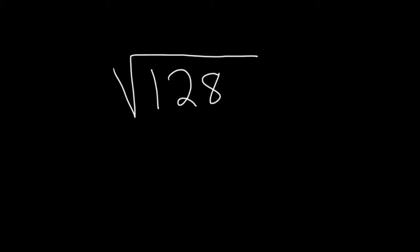In this problem we have to try to simplify the square root of 128. Let's go ahead and try to do its solution. So to do this we have to think about how can we factor 128 in a way that allows us to take the square root of one of the factors.